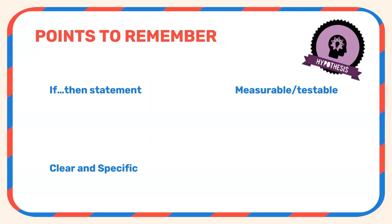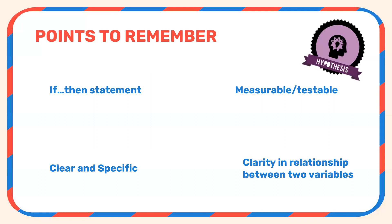Third, we should be clear and specific when we write the hypothesis, and the hypothesis should be concise and to the point — avoid wordiness. Fourth, there should be clarity in the relationship between the two variables. As seen in the examples, there must be clarity in the relationship between the independent and the dependent variable, and that will help us move ahead with the investigation.